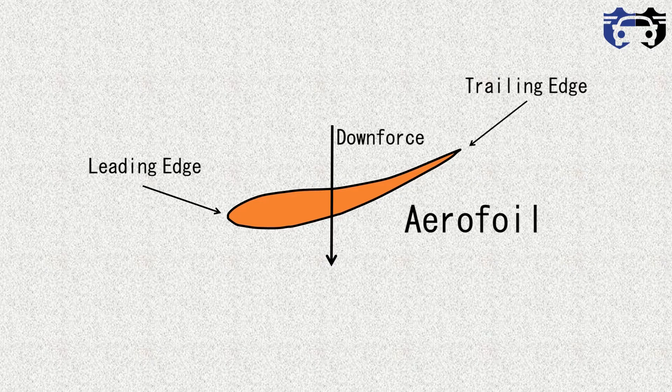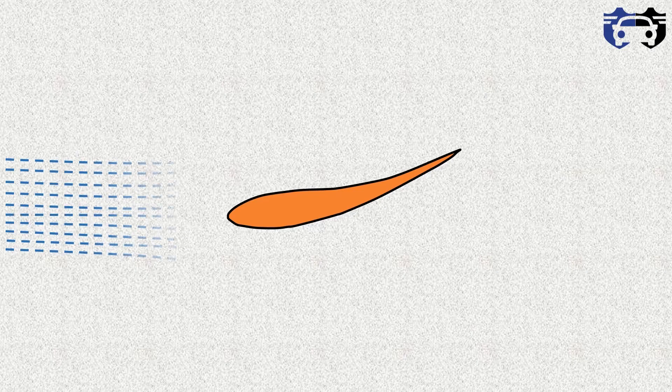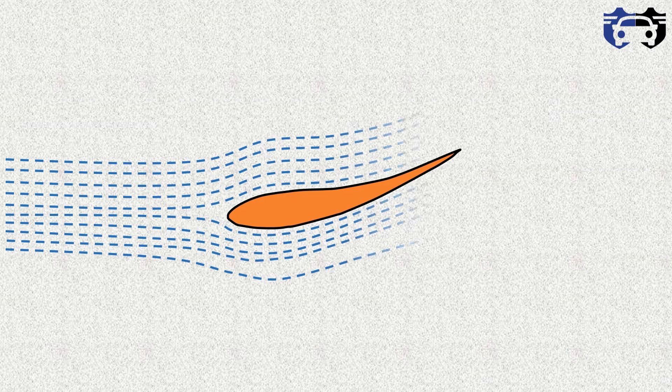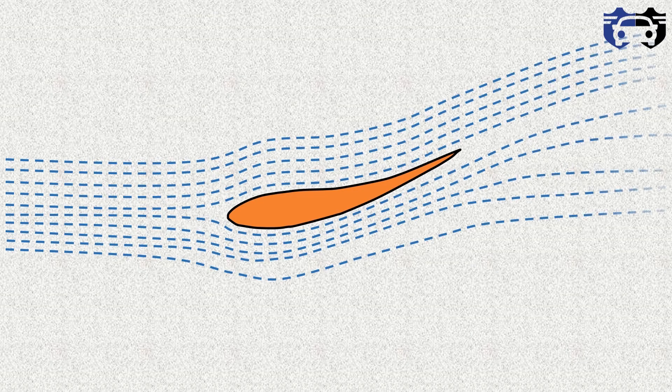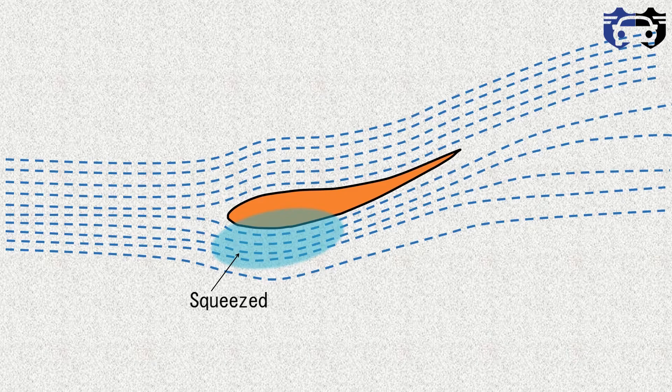Here these are the air particles, basically they are the air streamlines. Now as the air passes through the airfoil it gets deflected like this. At the top the streamlines are following the smooth curve of aerofoil and at the bottom you can see it is squeezed at the leading edge and then diverges at the end of the trailing edge.